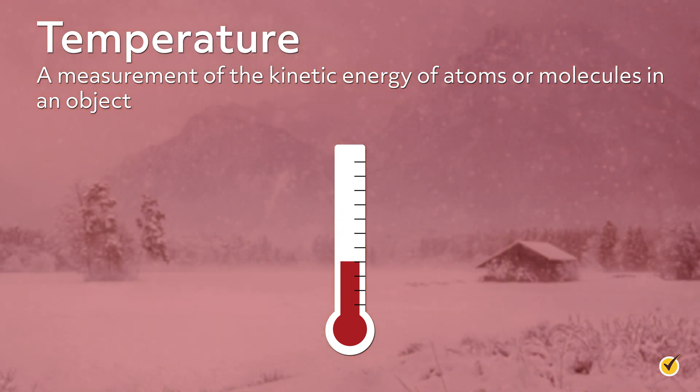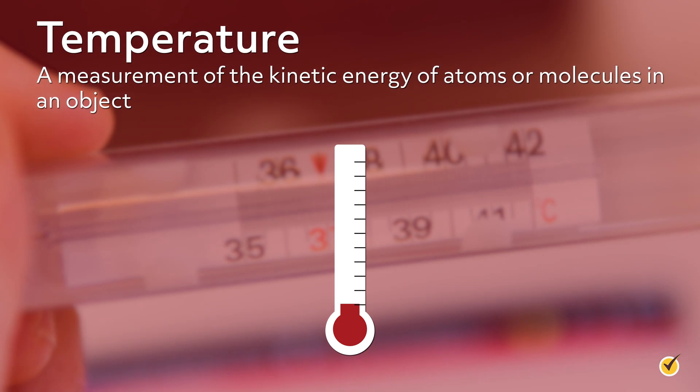As the object cools, it loses this heat energy to its surroundings. Most everyday thermometers give a temperature in units of degrees Fahrenheit or degrees Celsius. However, the SI unit of temperature is Kelvin. Most scientists use this unit for temperature in their models and equations.